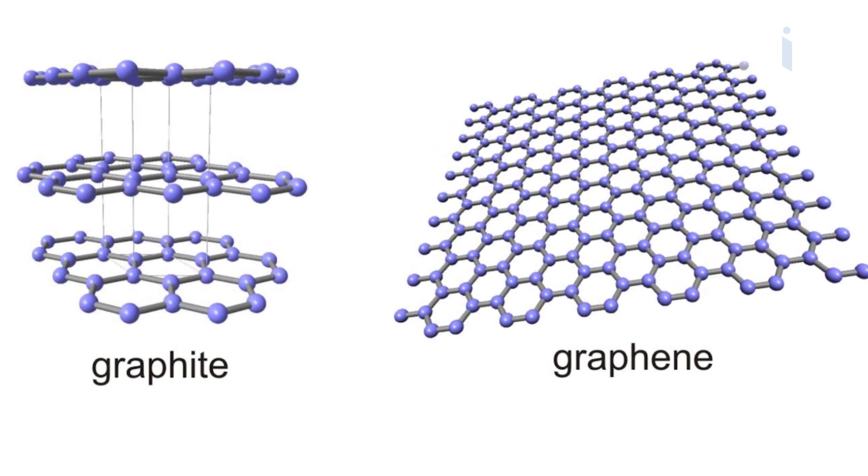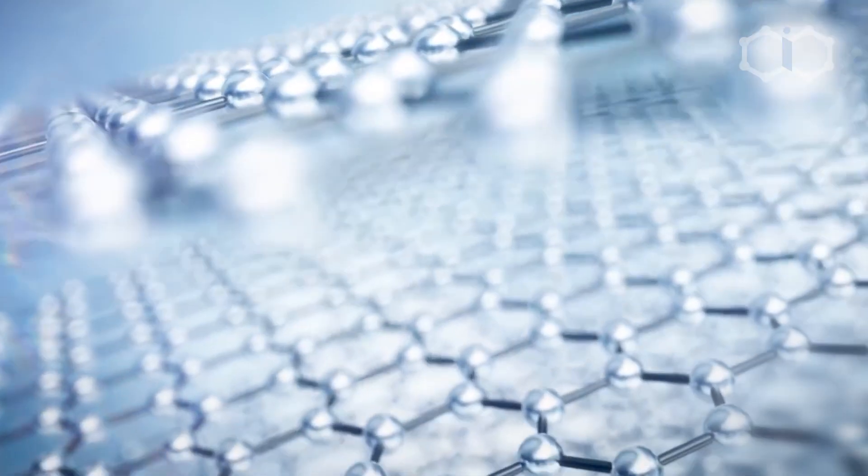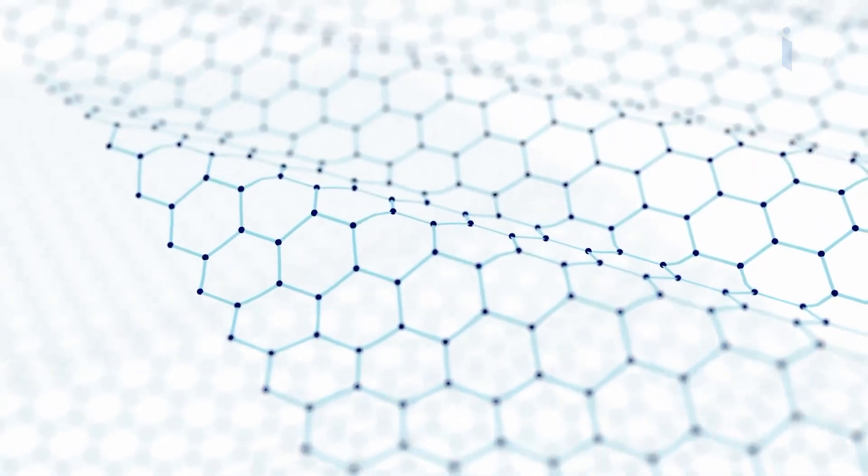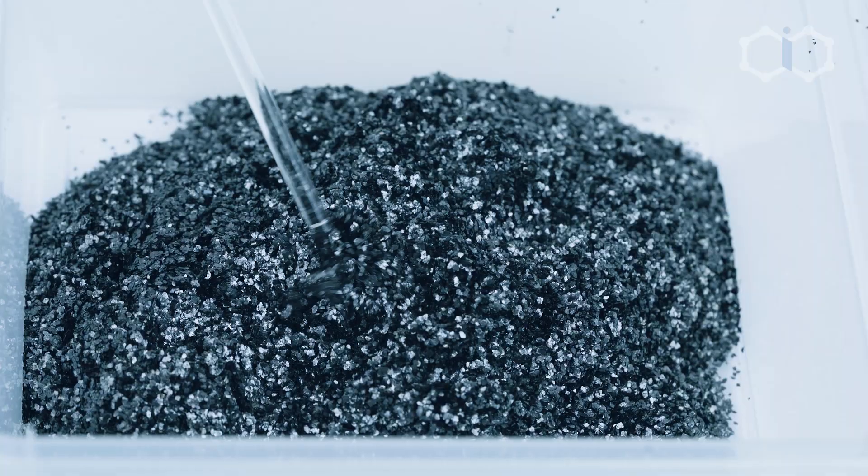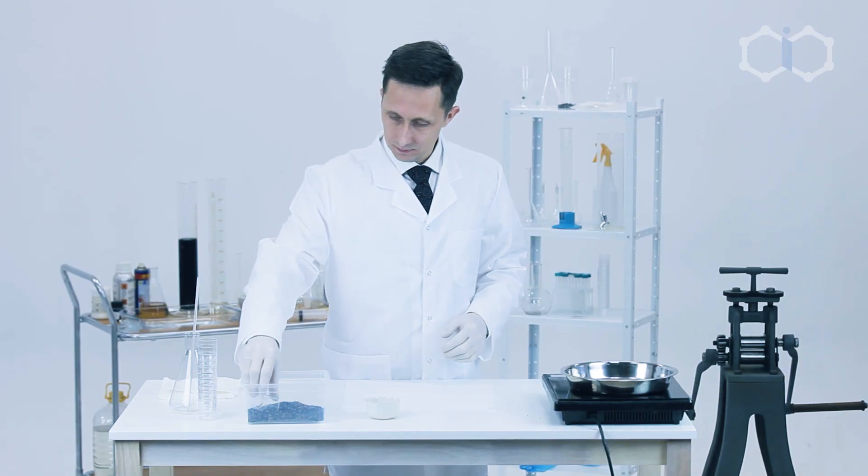Graphene is a two-dimensional modification of carbon formed by a layer with a thickness of one atom. Our technology uses flake graphite which is treated by a special compound of chemical elements.